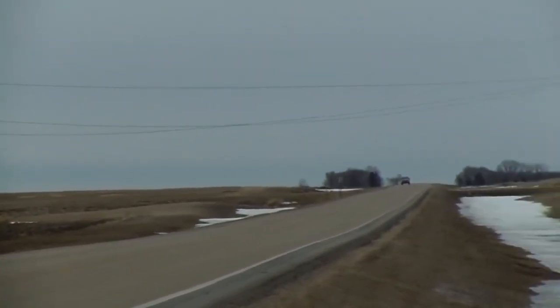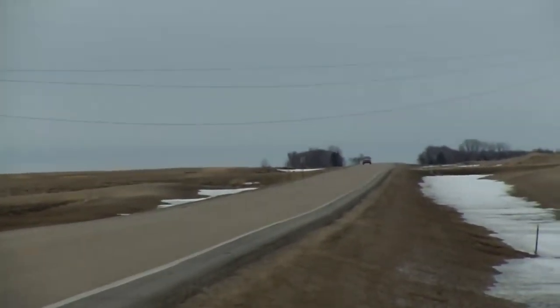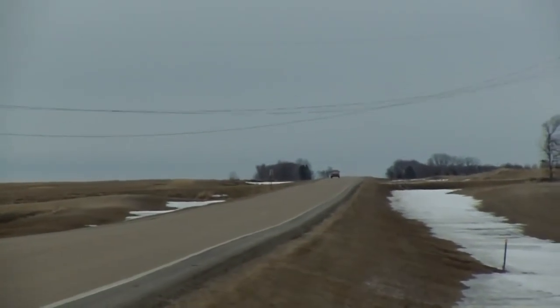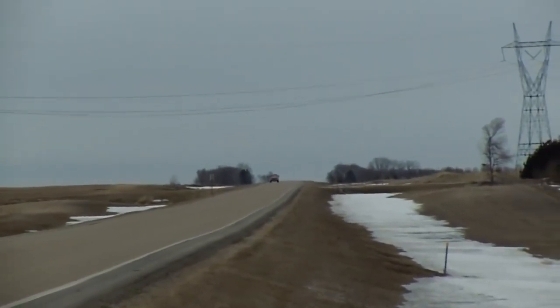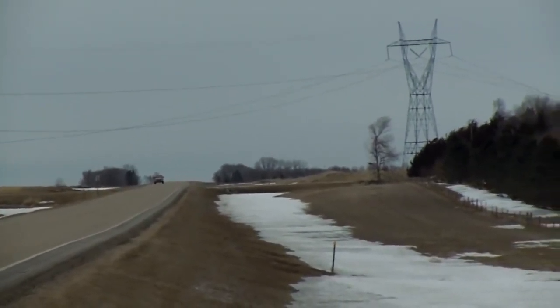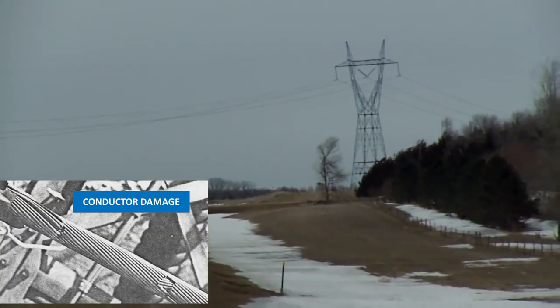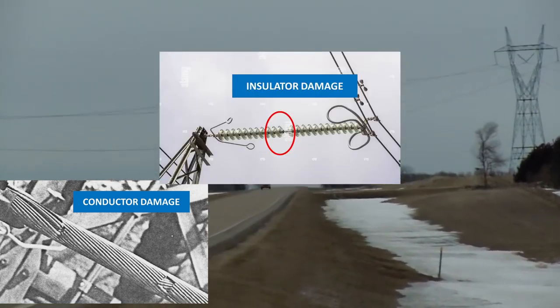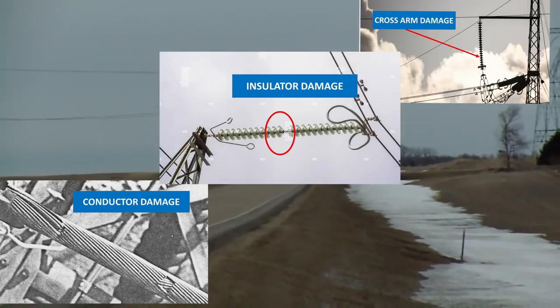This effect is called galloping effect or dancing of conductor. During such types of bad weather conditions, this situation may arise and it will cause breaking of the conductor, failure of the insulator, and bending of the cross arm.